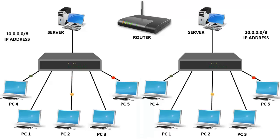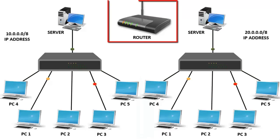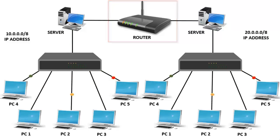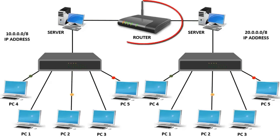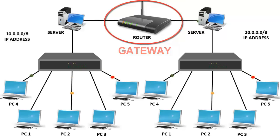As these two are different networks, they cannot communicate with each other. So we use a centralized device called a router. Now whatever data is sent by network1 to network2 or vice versa, it will go through the centralized device router. Like this, the router is acting as a gateway — it is the main gate to enter into a different network.